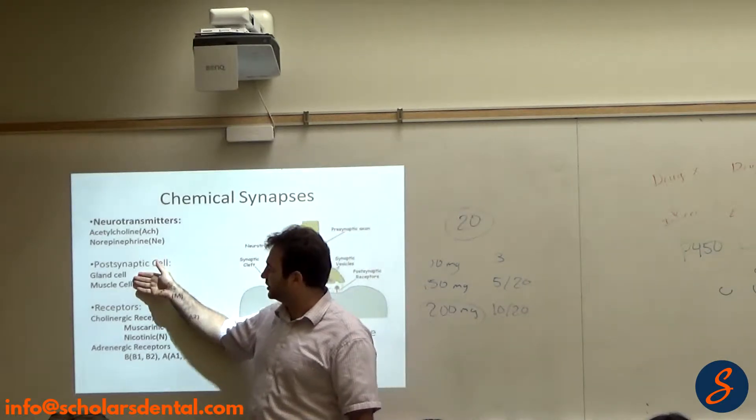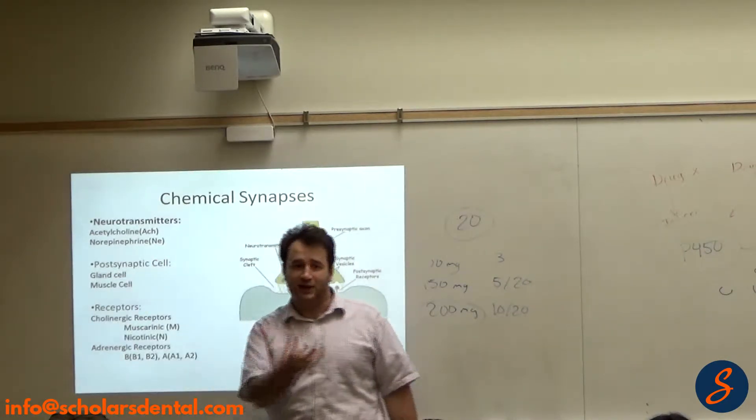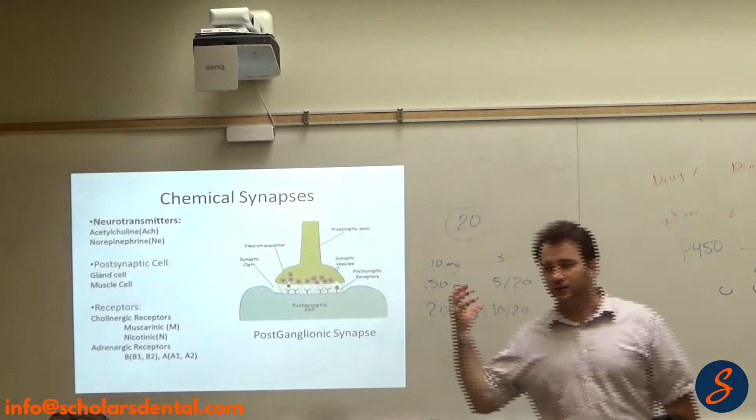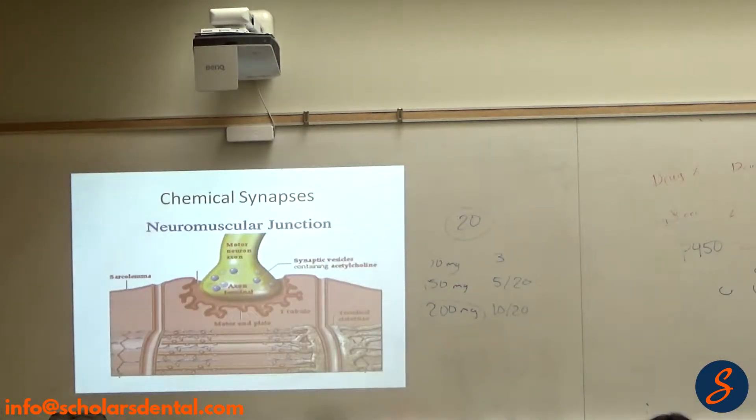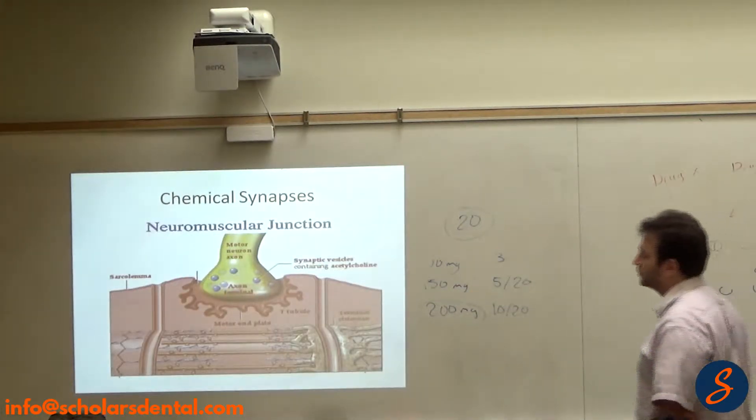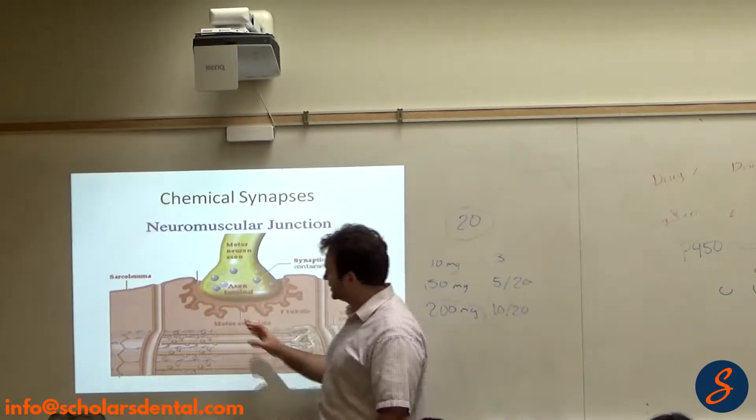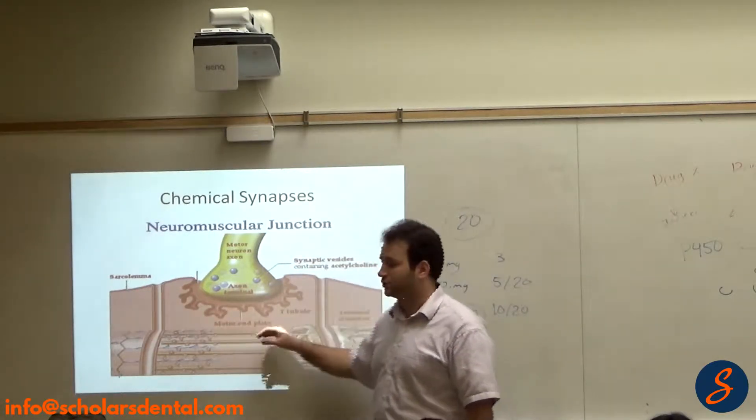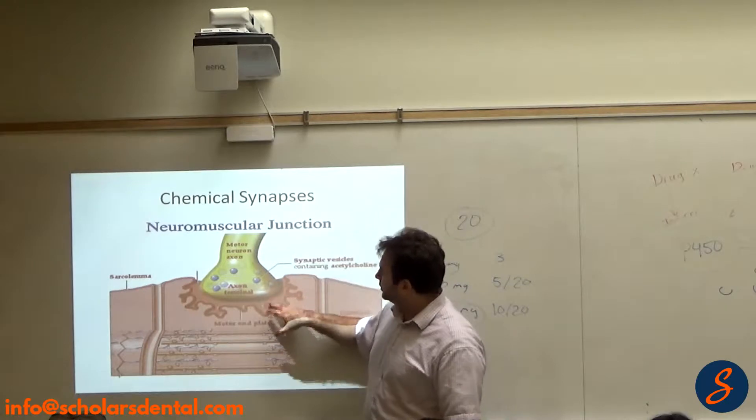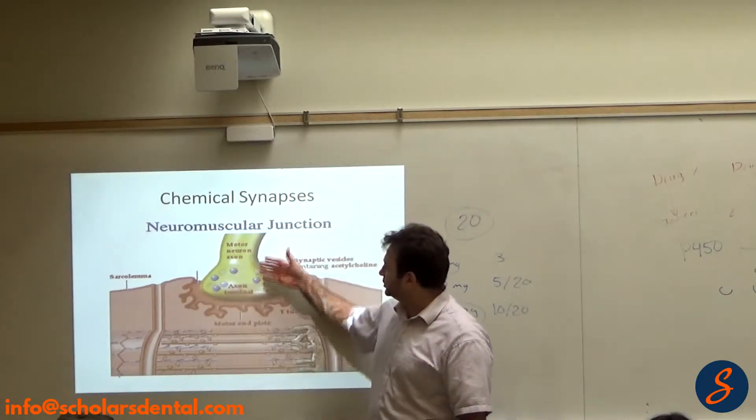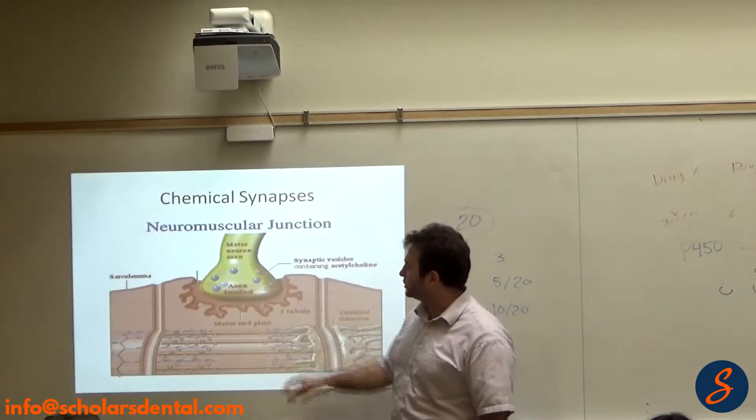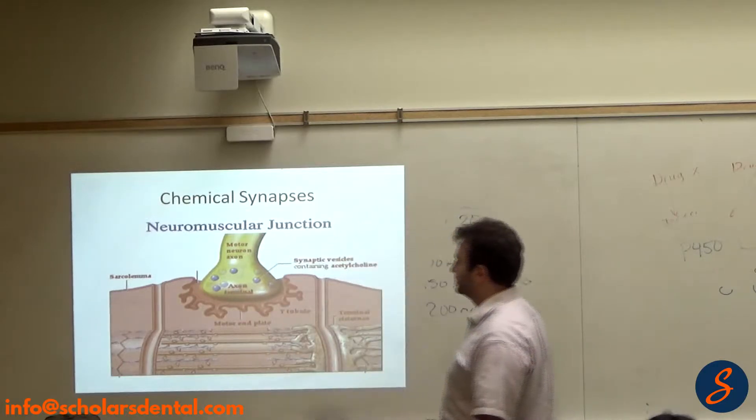The post-synaptic cell can be a gland or a muscle that's getting the information. If we're talking about the skeletal cell or muscle, or the striated muscle—same meaning—this is called the neuromuscular junction. We said that it's nicotinic muscular, that's the receptor that's there.